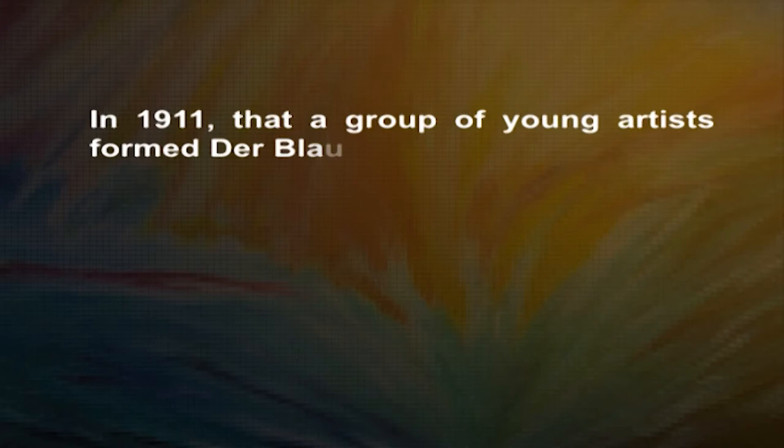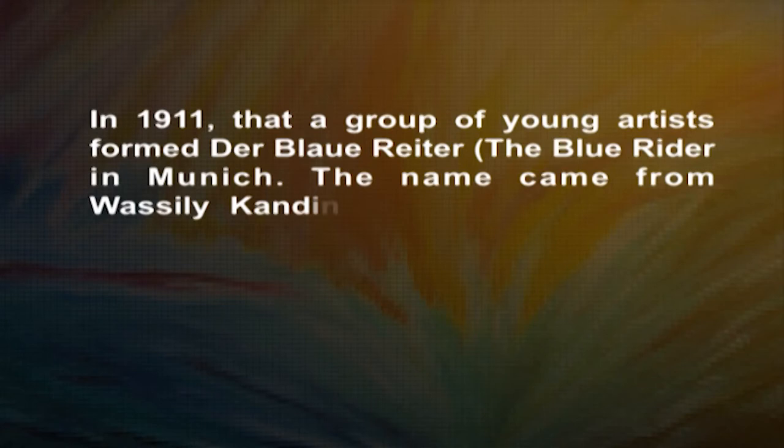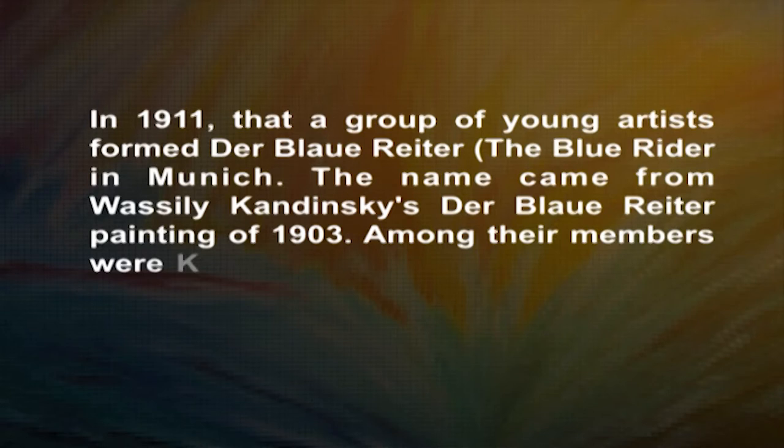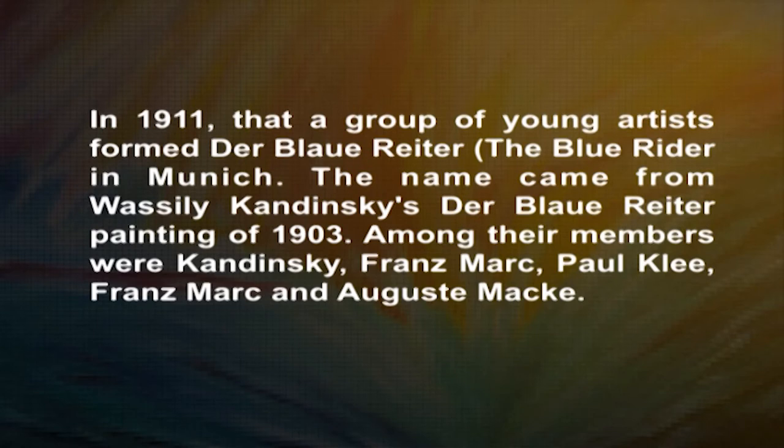In 1911, a group of young artists formed Der Blaue Reiter, the Blue Rider, in Munich. The name came from Vasily Kandinsky's Der Blaue Reiter painting of 1903. Among their members were Kandinsky, Franz Marc, Paul Klee, and August Macke. The group's formation was sparked by the rejection of Kandinsky's oil painting The Last Judgment, from around 1910, from a local exhibition. The painting contained swirling abstract forms and apocalyptic suggestions and was deemed too obscene for public display.